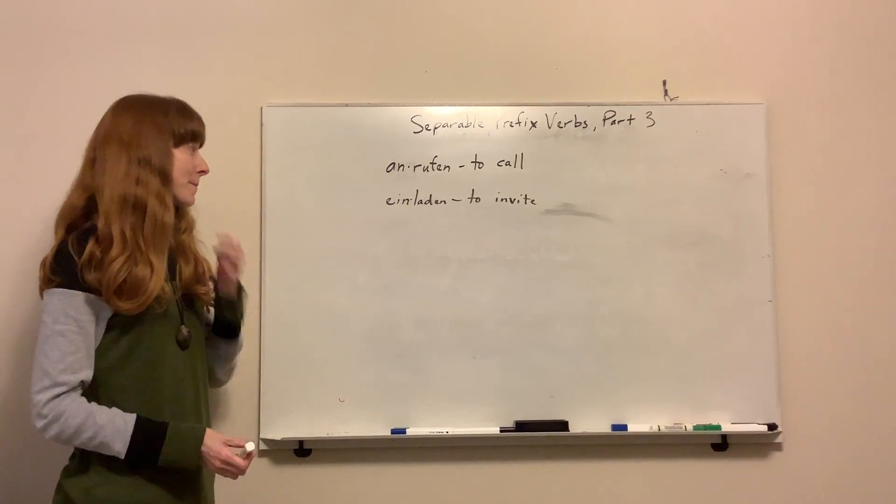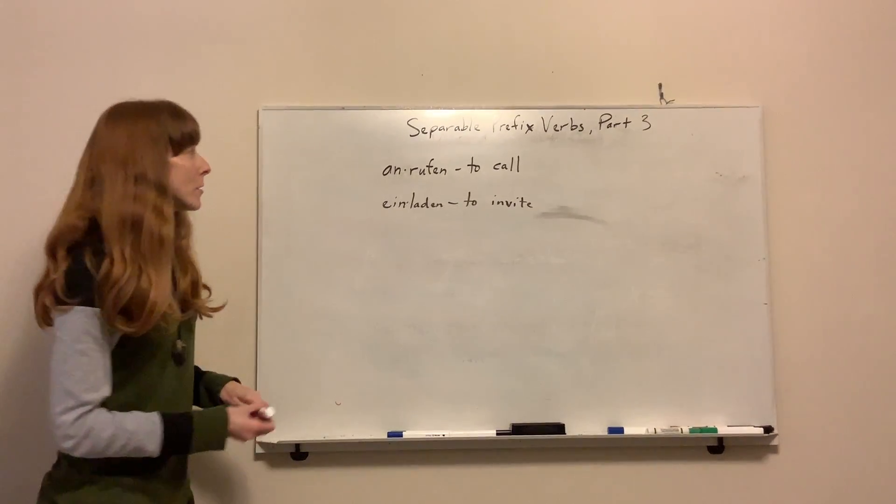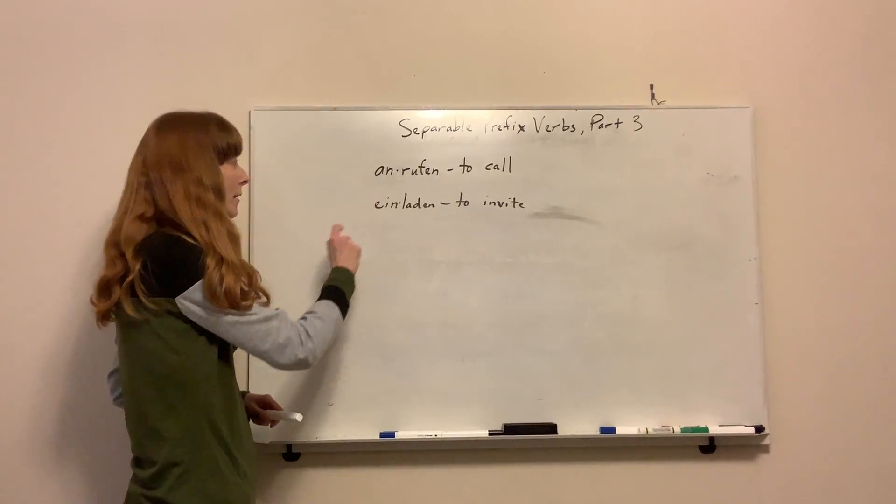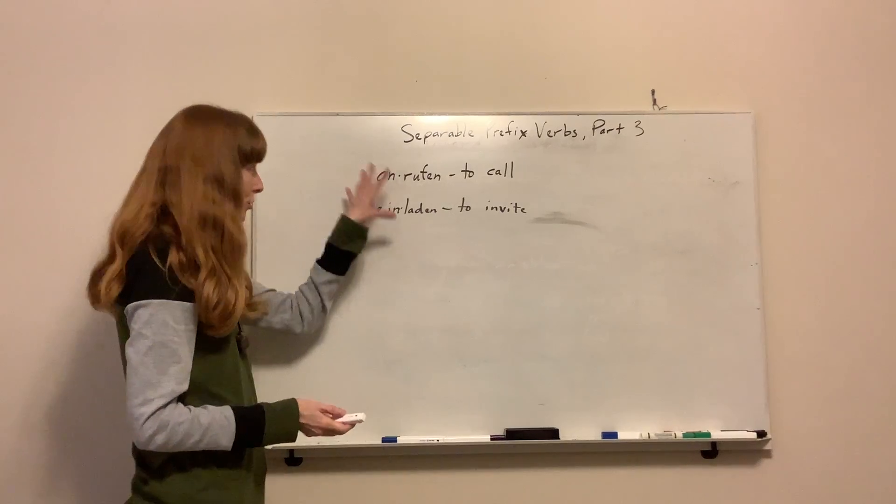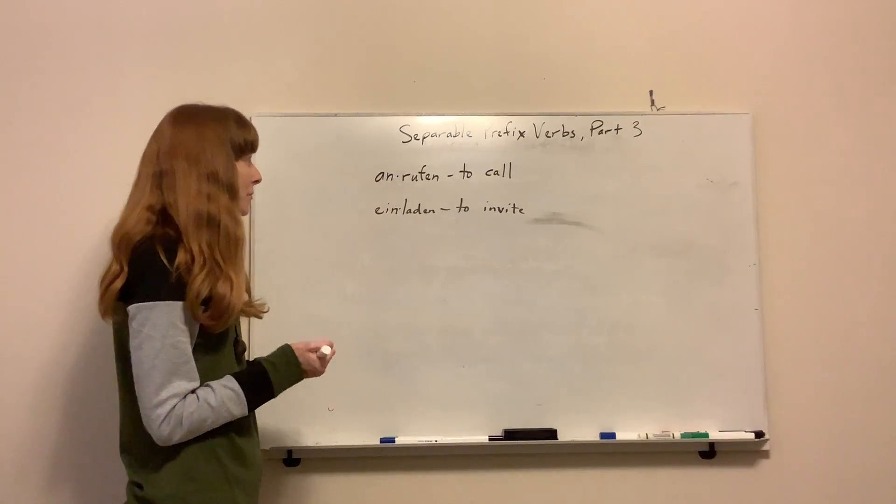Separable prefix verbs, part three. I have two different ones up here: Anrufen, to call, and Einladen, to invite. They work the same way as the others. We will still conjugate them as we did in the last video.